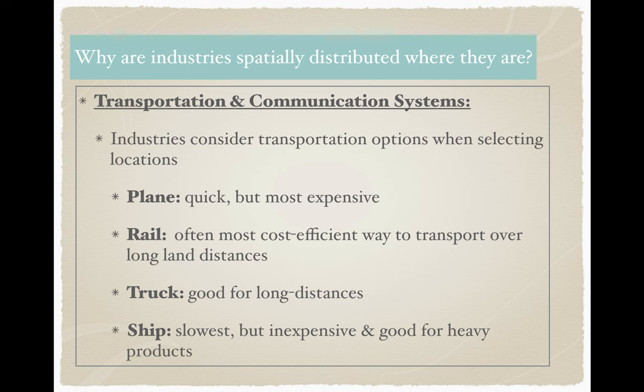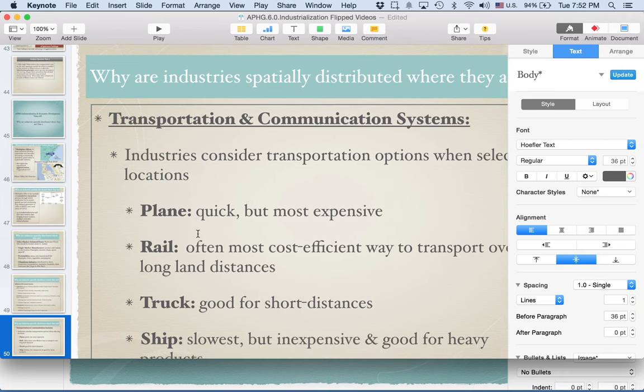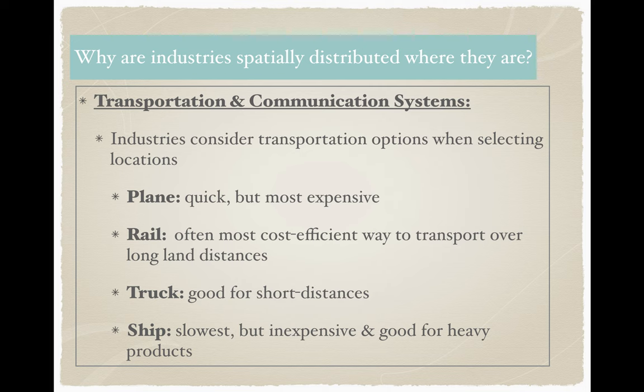There are four main types of transportation options. There's plane — you can ship anything on a plane, but it's extremely expensive and weight is a concern. Rail is often the most cost-effective way to transport over long distances over land. Trucks are good for shorter distances on land, and not everybody lives on a rail line so trucks are often a good option. And ships — ships are slow, very slow, but they're the most inexpensive and very good for heavy products. These are the four general transportation systems.